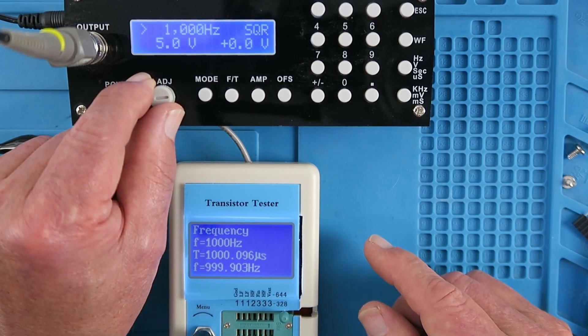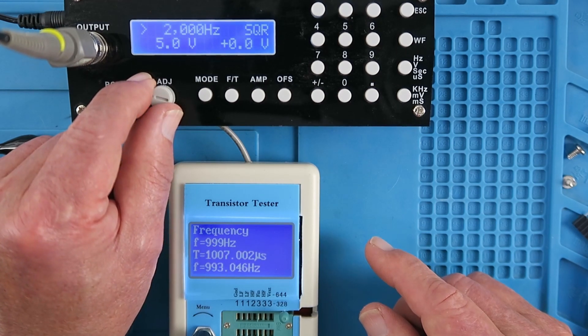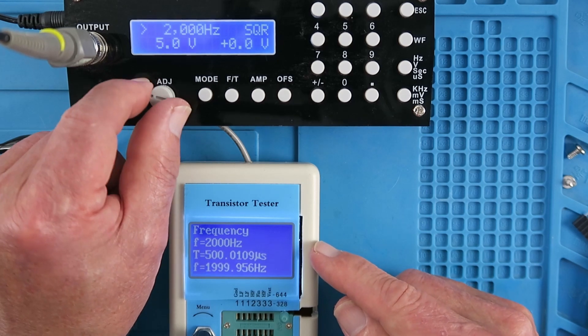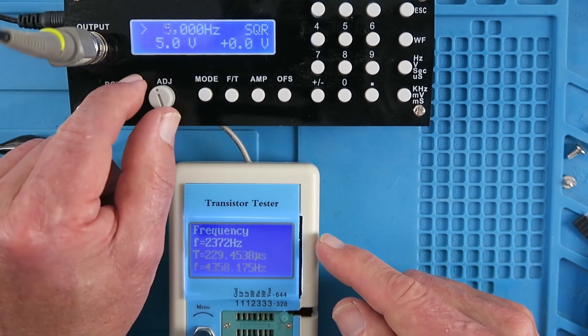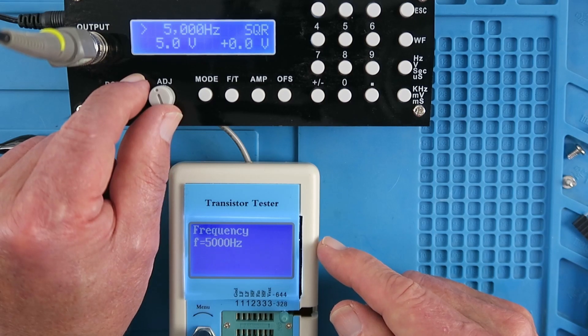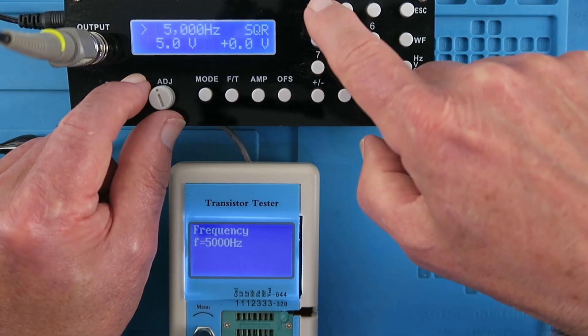On the function generator, the step is set to 1kHz at the moment, so we can go up to 2kHz, wait for this to do its sampling, that's 2kHz, leave for 5kHz. So it all looks good there, let's try a higher step, let's go to 10kHz.